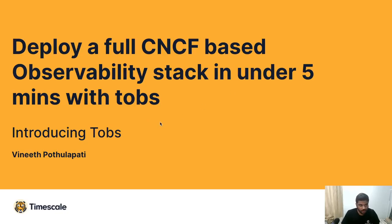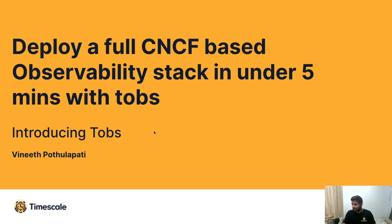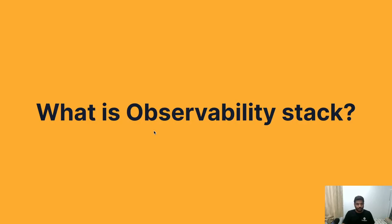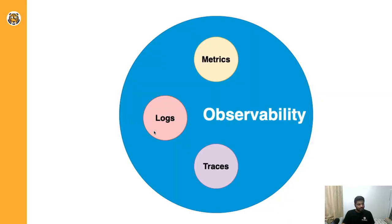Hello everyone, today we'll be discussing how to deploy a full CNCF-based observability stack in under five minutes with TOBS. Observability in general is the ability to infer the internal state of a system using the system's external output. This output can be metrics, logs, and traces — the three main data types of observability.